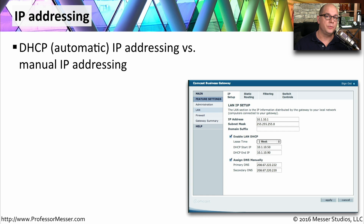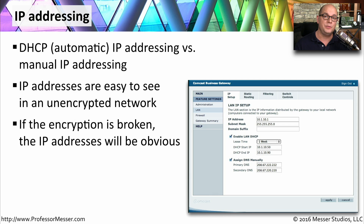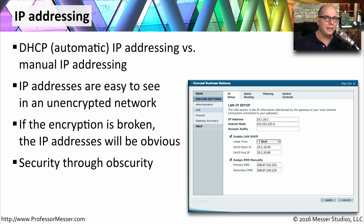Most wireless routers will assign IP addresses in your SOHO through DHCP, which is an automatic IP addressing mechanism. You could set up manual IP addressing where you administratively set the IP address on every single one of your devices. However, if you're not using encryption on your wireless network, it's very easy to see what these IP addresses might be. And if someone manages to find your passphrase and get into your wireless network, they'll also be able to see the IP addresses. Assigning IP addresses automatically or manually is not really a security feature — it might feel more obscure, but it provides no additional security.